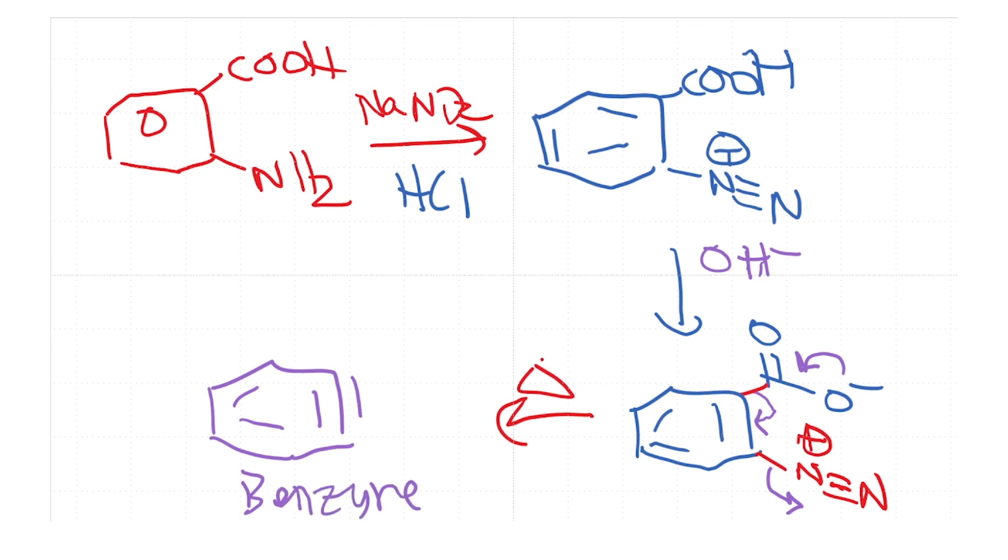Okay. So this is a very nice way to produce benzyne and obviously the benzyne is not very stable. So when you generate this benzyne under these conditions, what you do is you do a cycloaddition reaction. So the cycloaddition reaction can actually happen in the following manner.